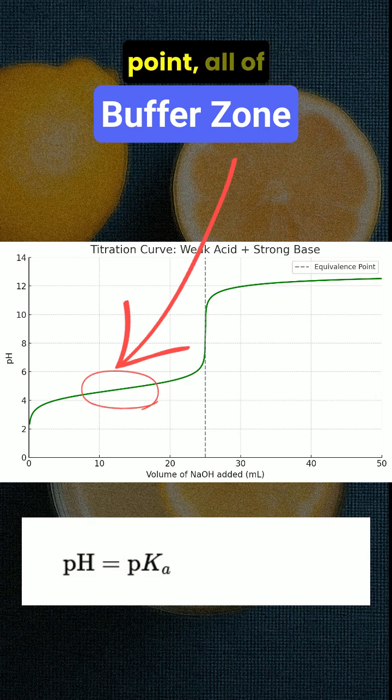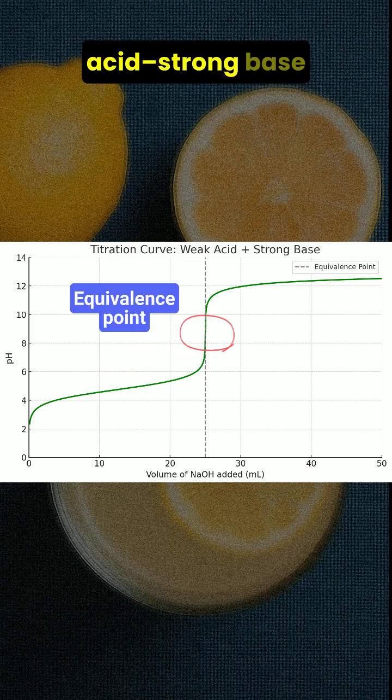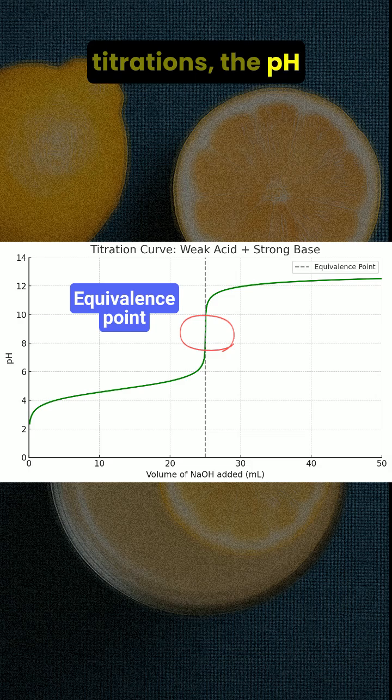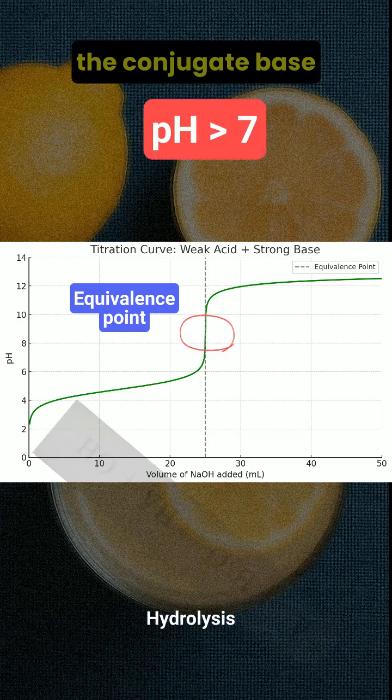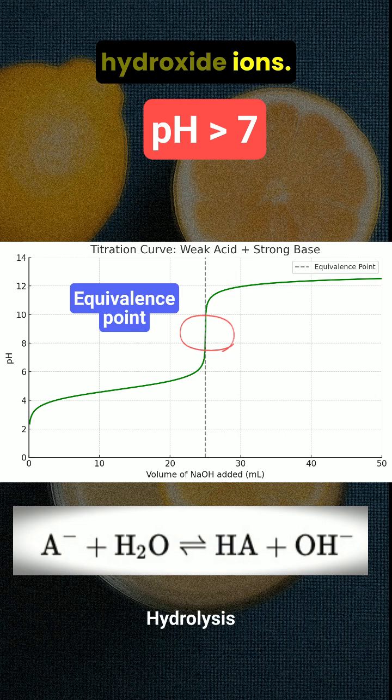At the equivalence point all of the weak acid has been neutralized by the strong base. But unlike strong acid strong base titrations, the pH at this point is not neutral. It is above 7 because the conjugate base undergoes hydrolysis and produces hydroxide ions. The pH is typically around 8.5 to 9.5.